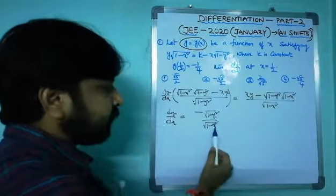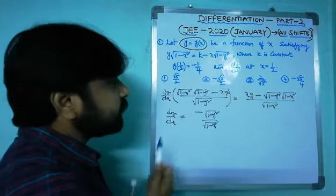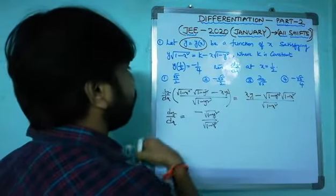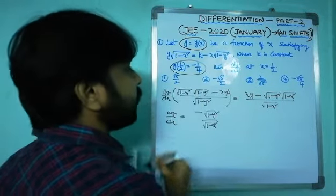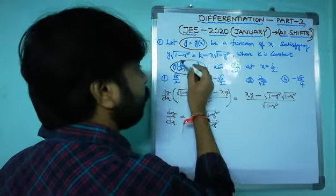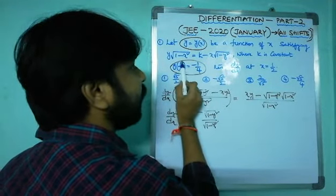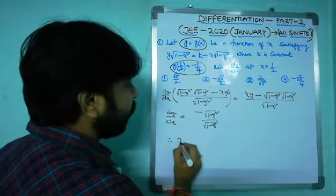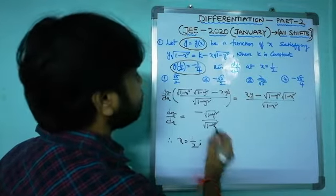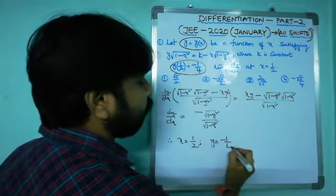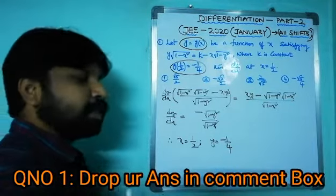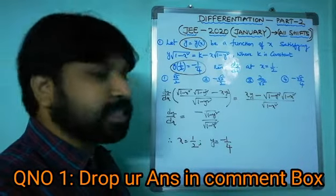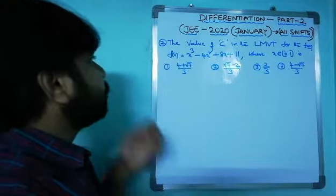Now dy/dx = -√(1-y²)/√(1-x²). To find dy/dx at x = 1/2, substitute x = 1/2 and y = -1/4, since y(1/2) = -1/4 means whenever x = 1/2, y takes the value -1/4. Substitute these values and evaluate the answer. Post your answer in the comment box.